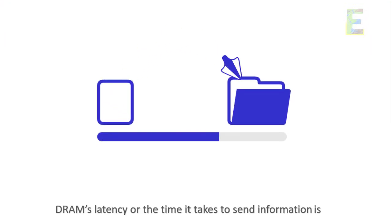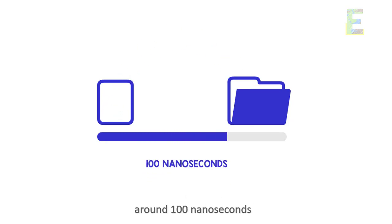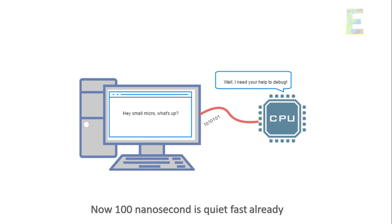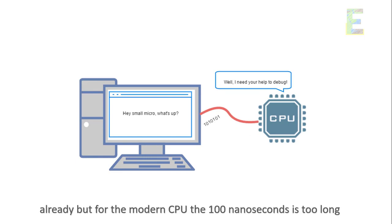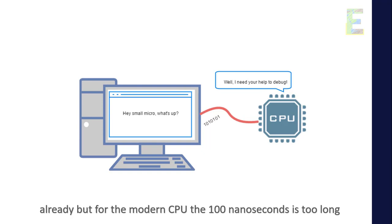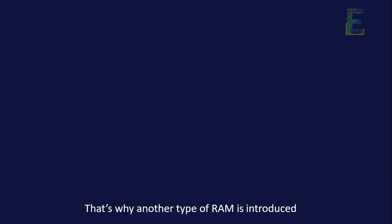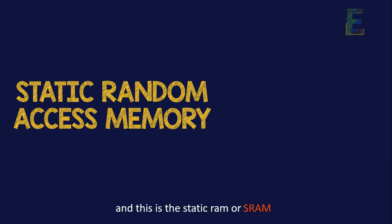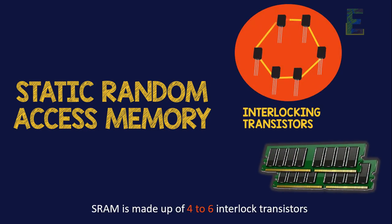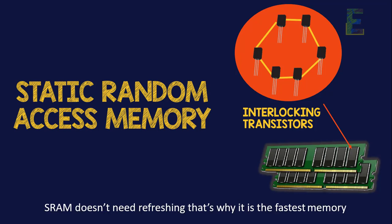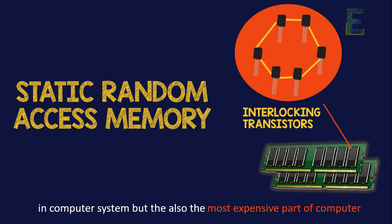DRAM's latency, or the time it takes to send information, is around 100 nanoseconds. Now, 100 nanoseconds is quite fast already, but for the modern CPU, 100 nanoseconds is too long. That's why another type of RAM was introduced: Static RAM, or SRAM. SRAM is made up of 4 to 6 interlocked transistors and doesn't need refreshing. That's why it is the fastest memory in a computer system, but also the most expensive part of a computer.